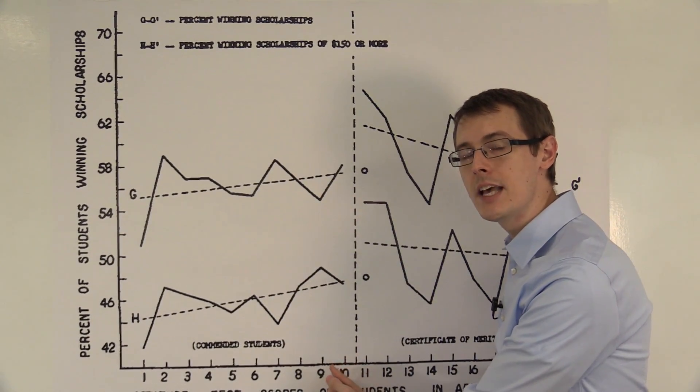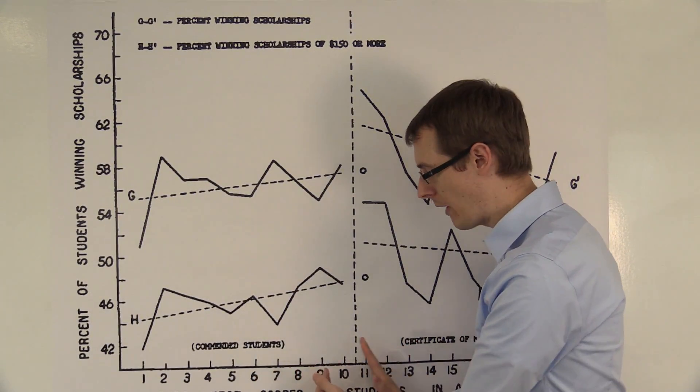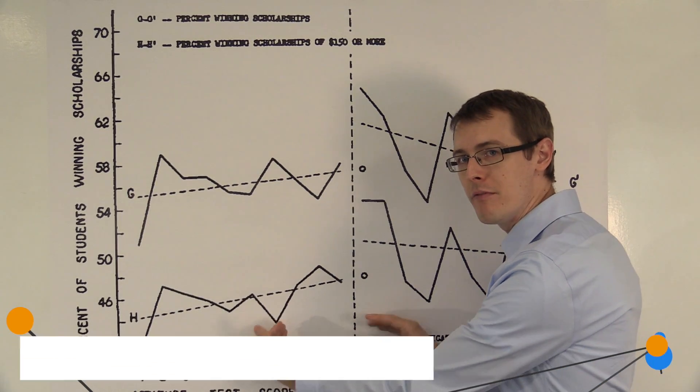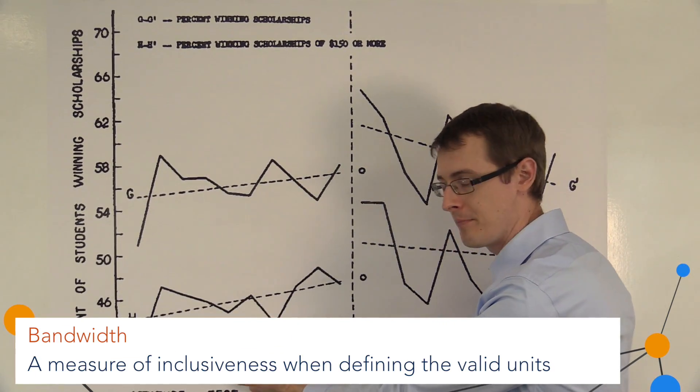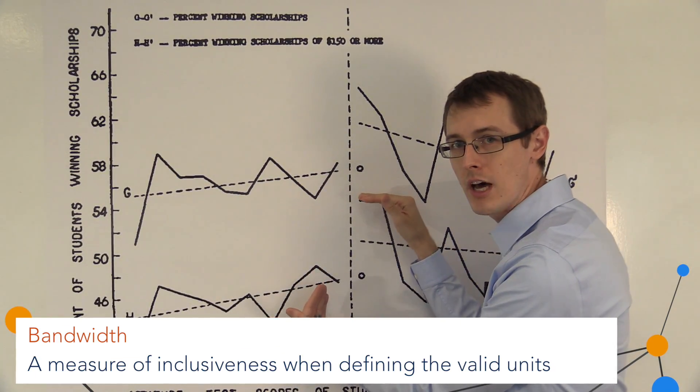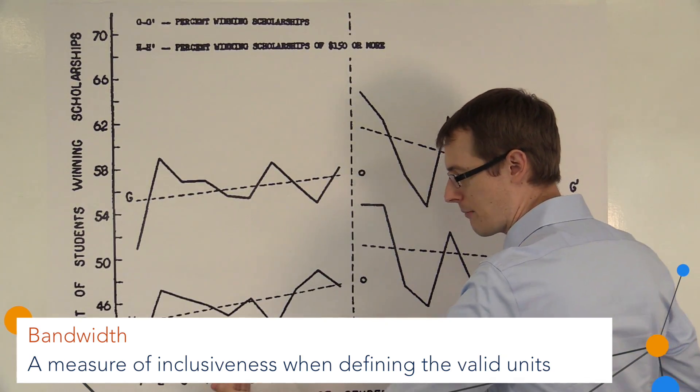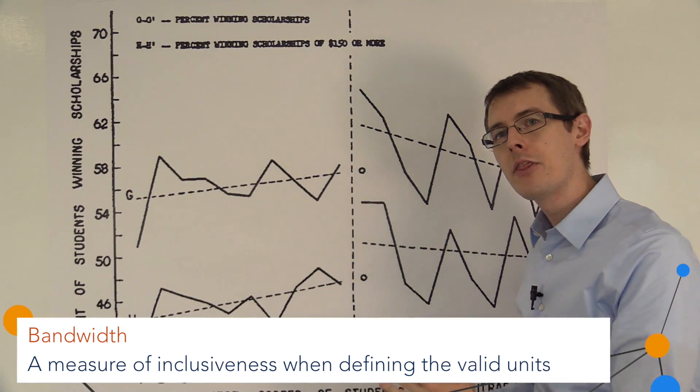So as I increase the bandwidth around the cutoff—the width of this band of people I include—I get a different estimated treatment effect for each time I add somebody else on.